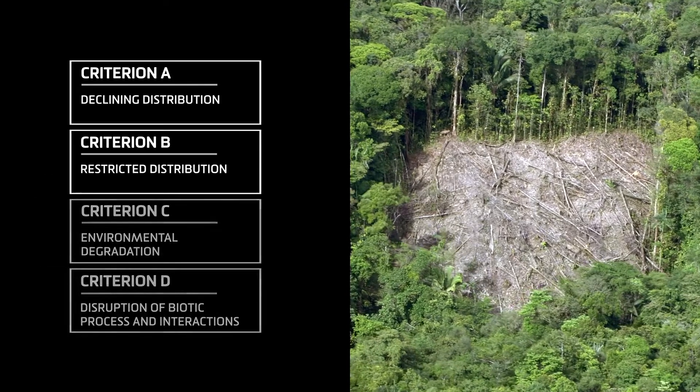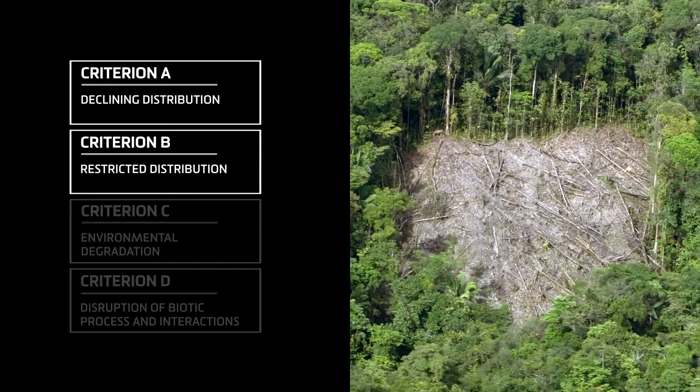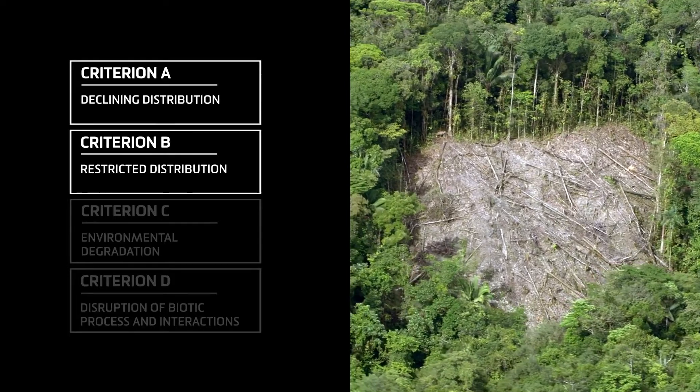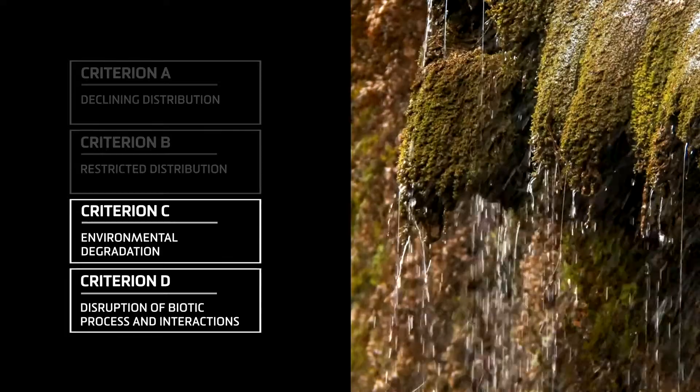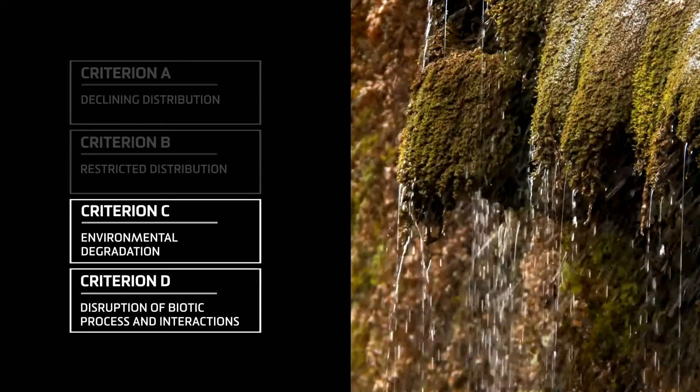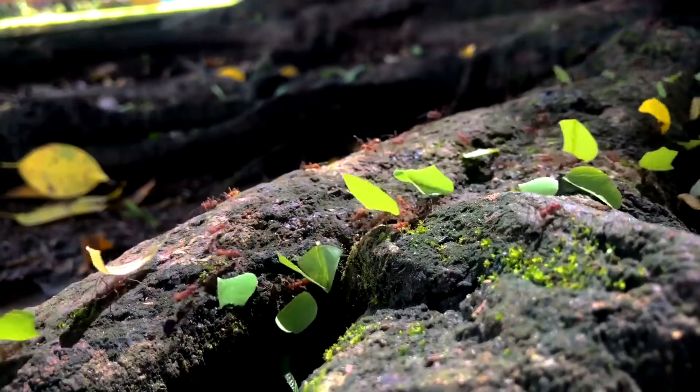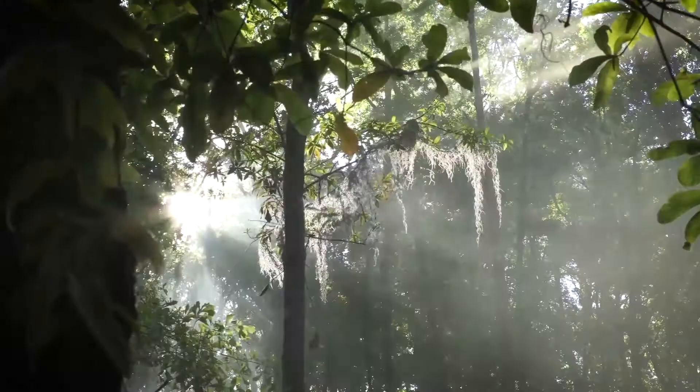Two of those four symptoms relate to the spatial characteristics of ecosystems and two relate to functional aspects of ecosystem behaviour, because there's a lot that can go wrong with an ecosystem without necessarily any change in its distribution.